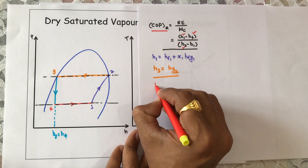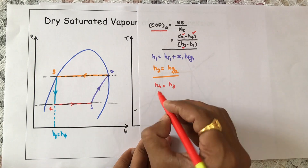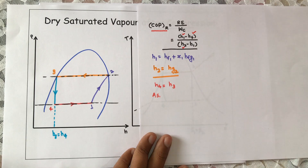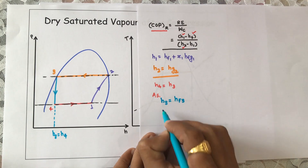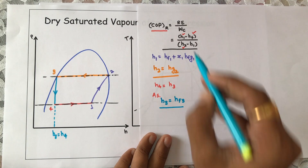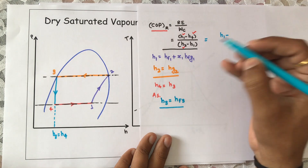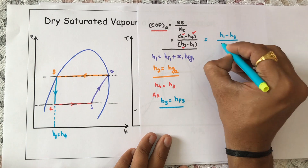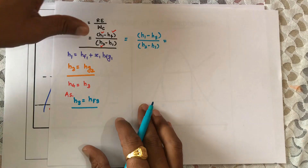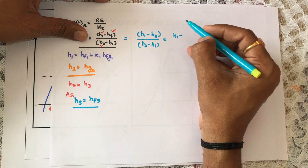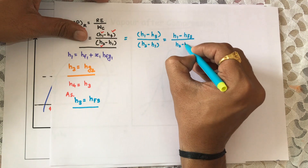For h4, since the process 3 to 4 is isenthalpic, h4 = h3. And h3 = hf3, since point 3 is on the saturated liquid line. Therefore, the COP equation becomes: COP = (h1 − hf3) / (h2 − h1).